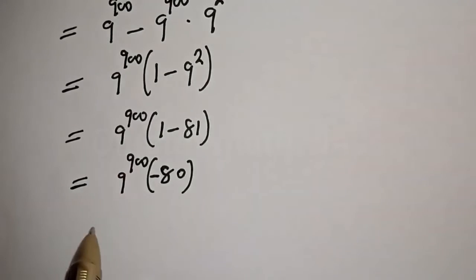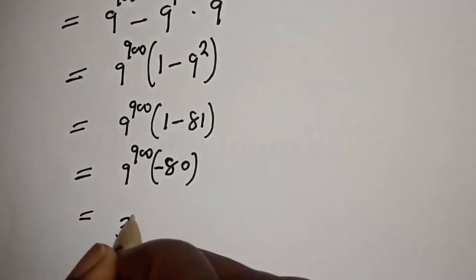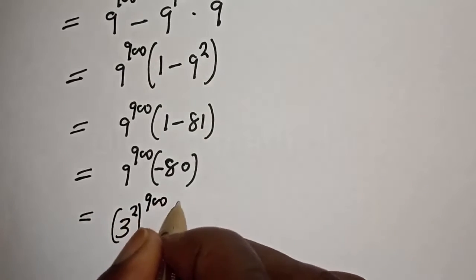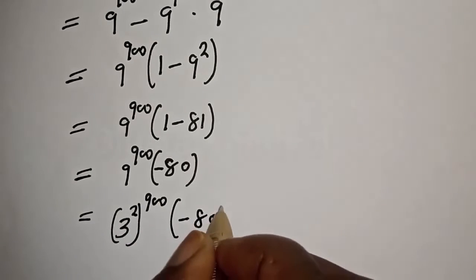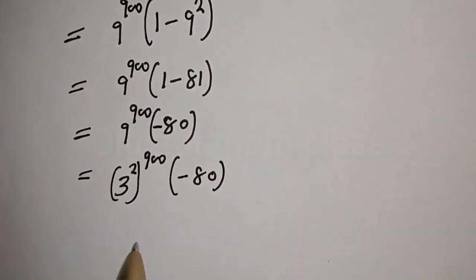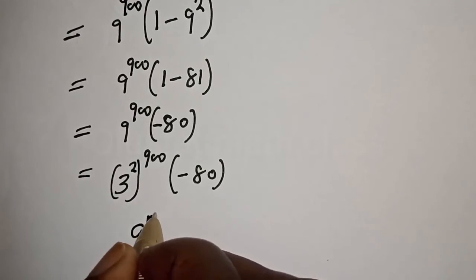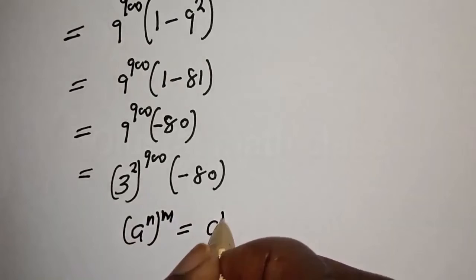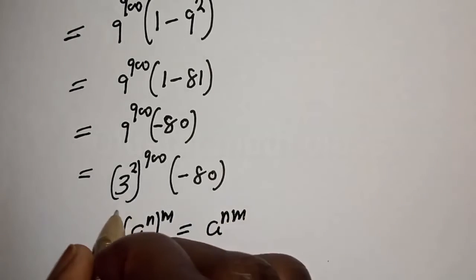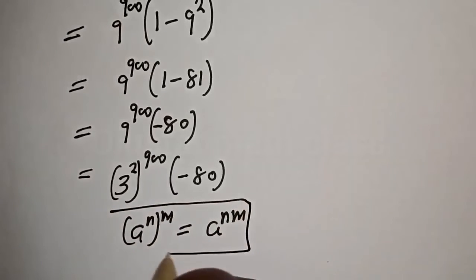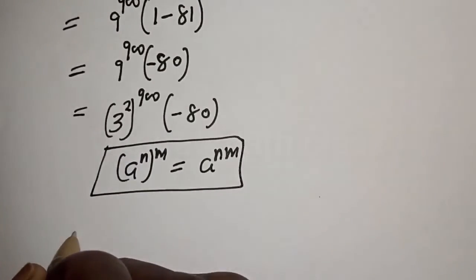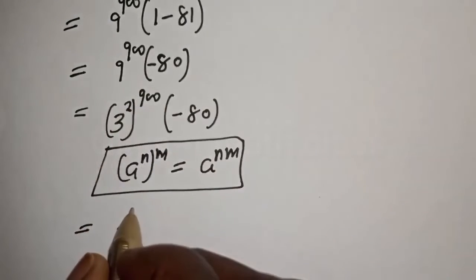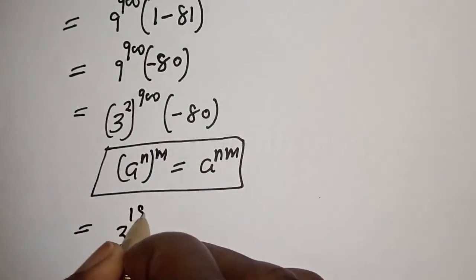Now 9 raised to power 900 can be expressed as 3 squared raised to power 900, multiplied by negative 80. Using the rule: a raised to power n, to the power of m equals a raised to power n times m. So 3 squared raised to power 900 becomes 3 raised to power 1800.